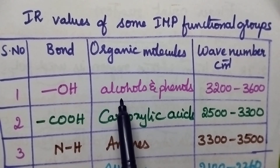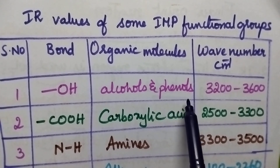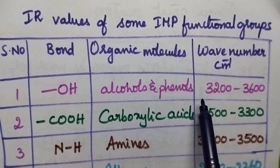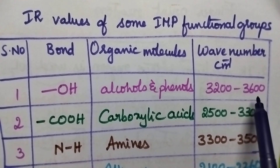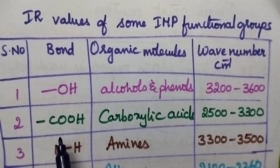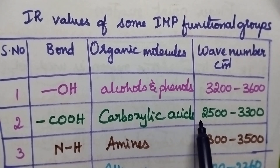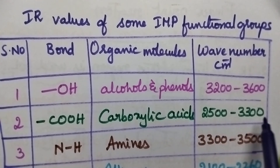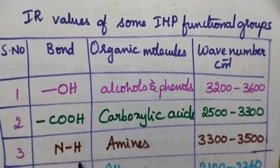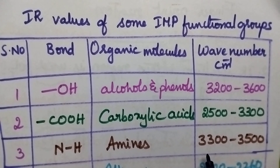OH group present in alcohols and phenols will show a characteristic absorption around 3200 to 3600 cm inverse. Acid group present in carboxylic acids will show a characteristic absorption from 2500 to 3300 cm inverse. NH group present in amines will show a characteristic absorption around 3300 to 3500 cm inverse.